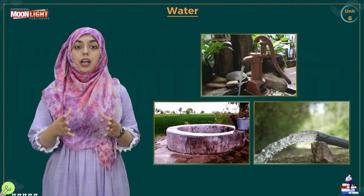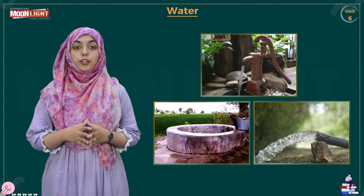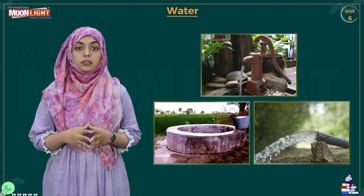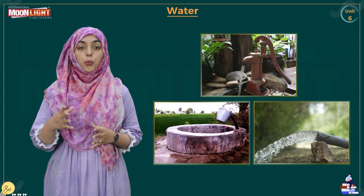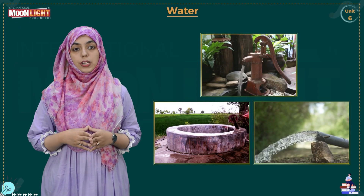We get water from all these sources. But dear children, you might wonder how this water reaches our homes. Water reaches our homes in two different ways. The first way is that we get underground water through pumps, wells, and tube wells.